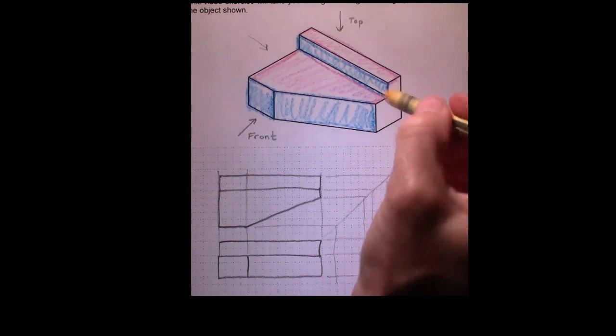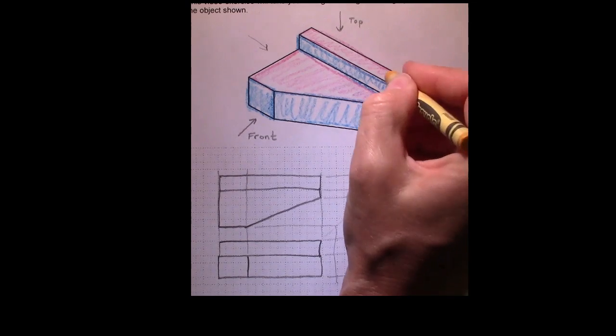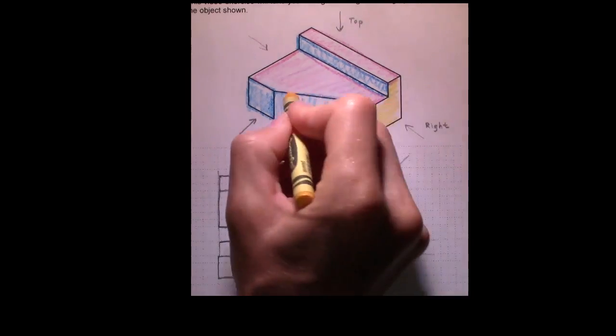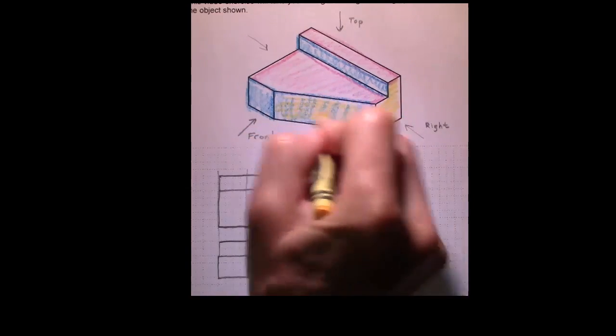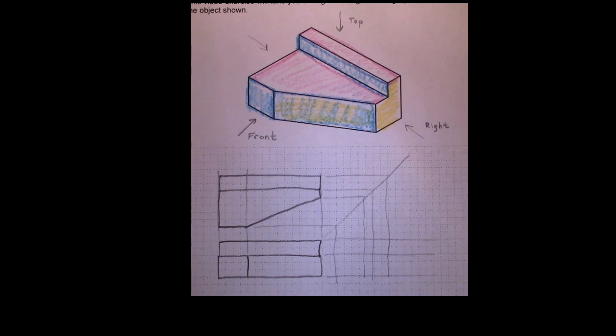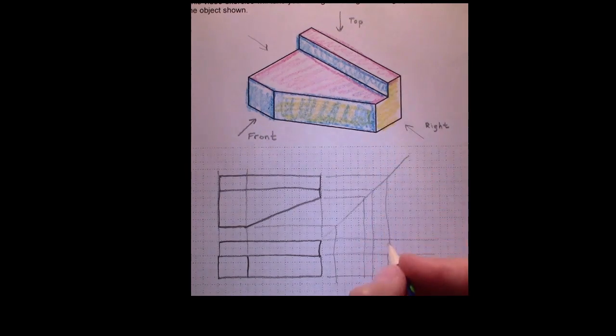So if we shade in our surfaces, we're going to be viewing this way. We're going to see that shape, and we're also going to see some of the angled surface. So let's draw this shape in first.